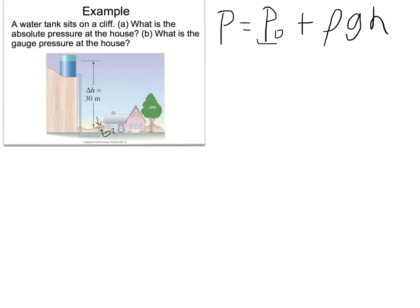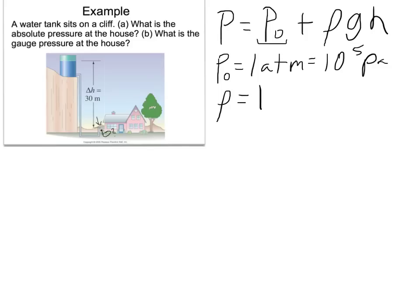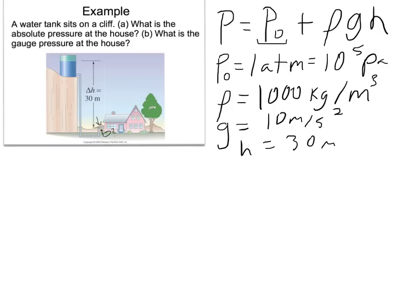First, initial pressure P₀ is about 1 atmosphere, which is about 10 to the 5th pascals — that's 100,000 pascals. Rho for water is 1,000 kilograms per meter cubed. If you haven't memorized that yet, take a second — you need to have it memorized by tomorrow; you can count on it being a reading quiz question. G on Earth is 10 meters per second squared, and the height given in the problem is 30 meters.